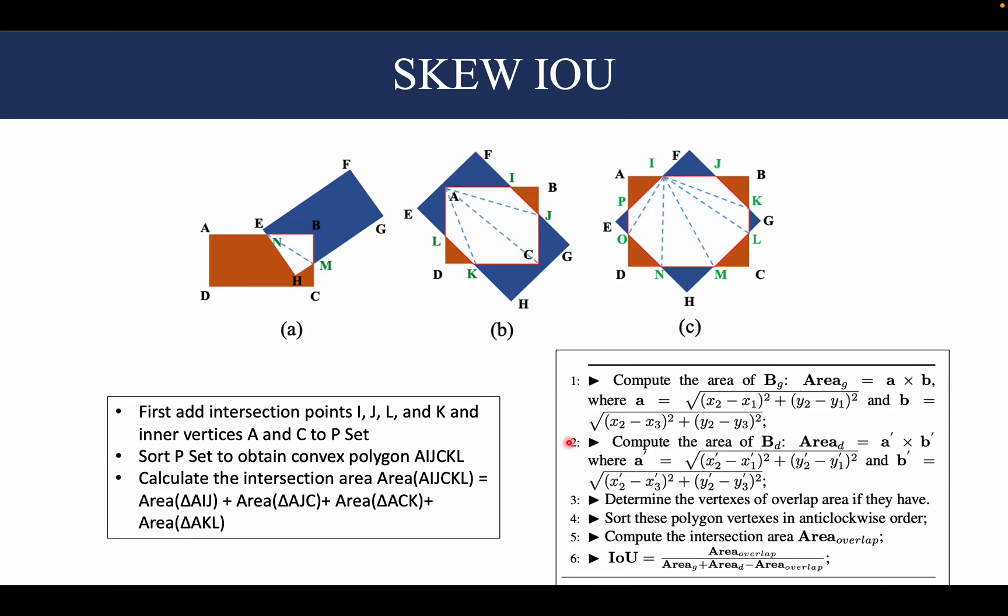Now we can calculate the SKEW IOU by taking the area of intersection or the area of overlap and dividing it by the area of the ground truth bounding box added with the area of the prediction and minus the area of the overlap.